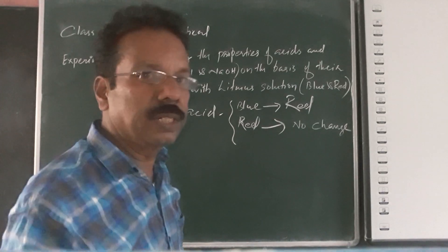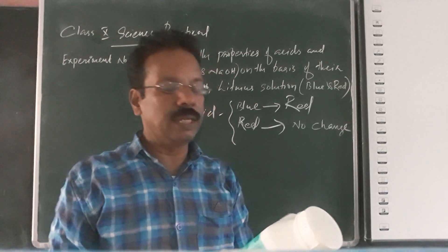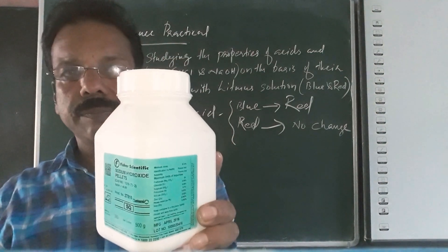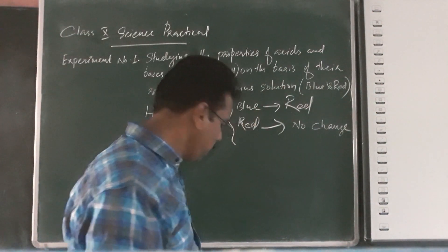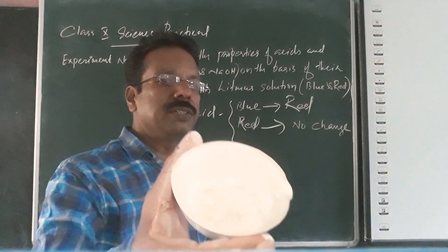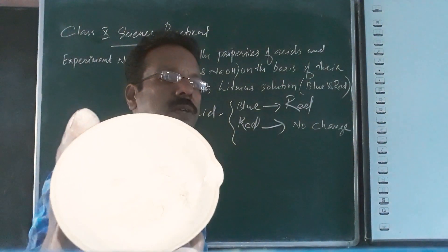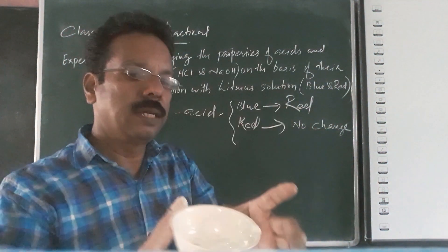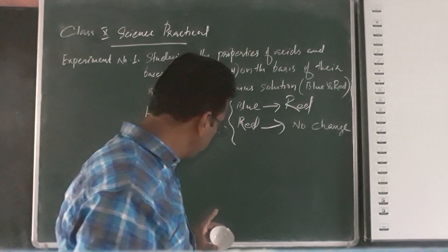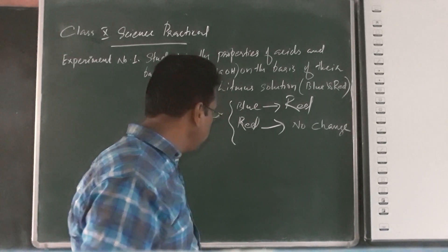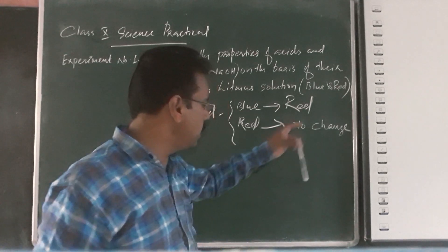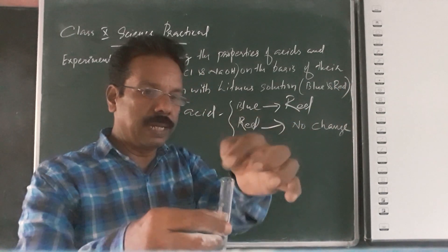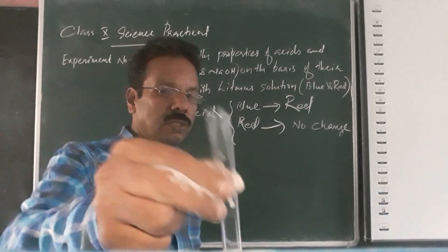Now we have sodium hydroxide. Sodium hydroxide is a base. Sodium hydroxide is taken in a china dish — can you see the sodium hydroxide pellets in it? It is highly corrosive; we cannot touch it with the hand. When taking the solution of sodium hydroxide, we put a few pellets in water to get a sodium hydroxide solution.